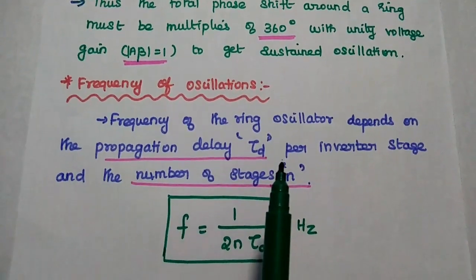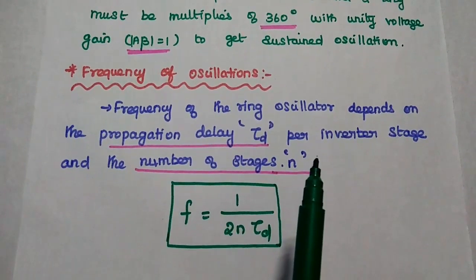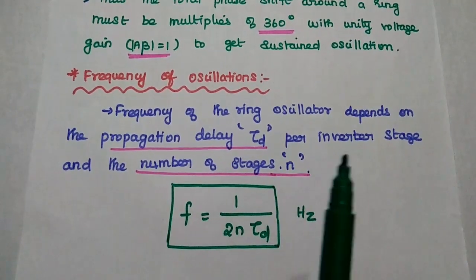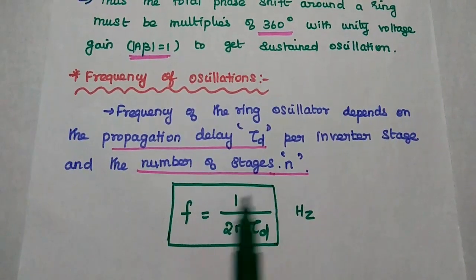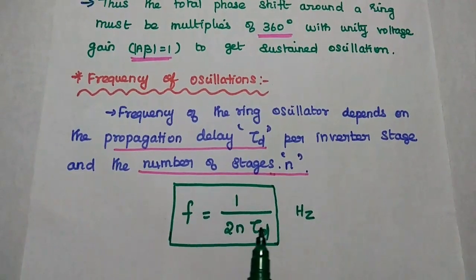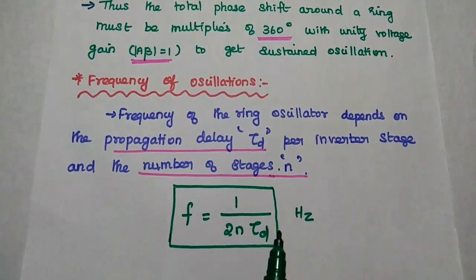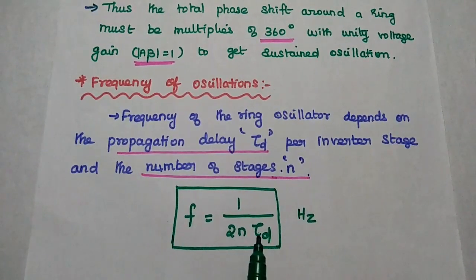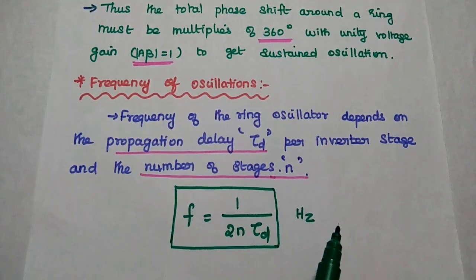Frequency of the ring oscillator depends on the propagation delay per inverter stage and the number of stages. So here f equals 1 by 2N tau D. So here tau D is nothing but the propagation delay per inverter in the ring oscillator.